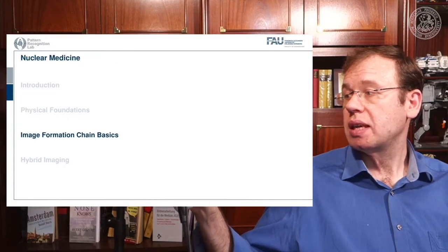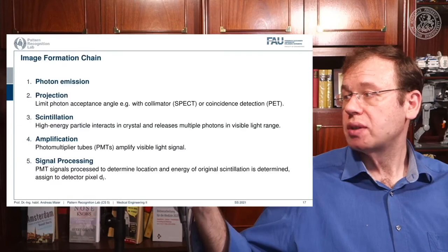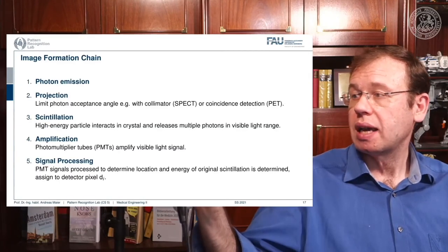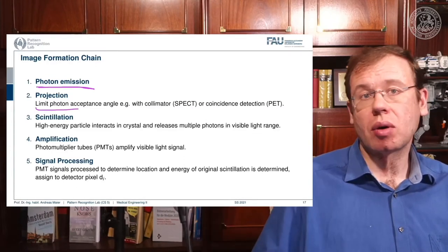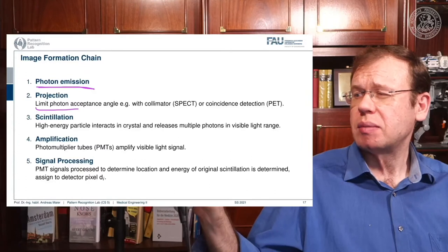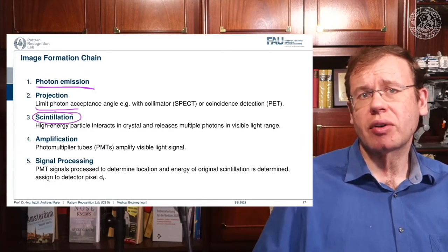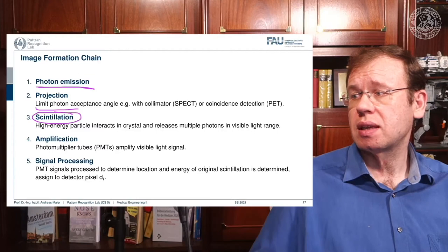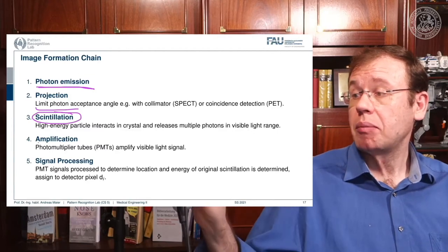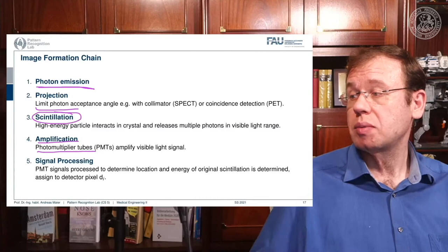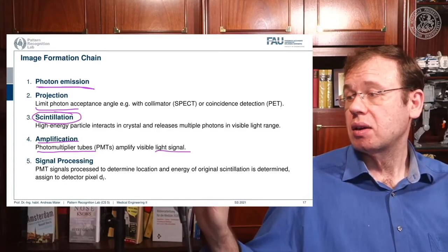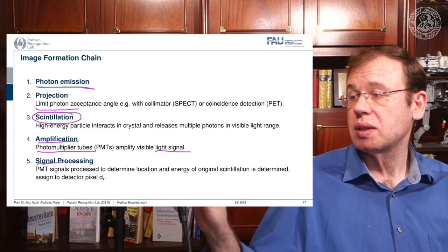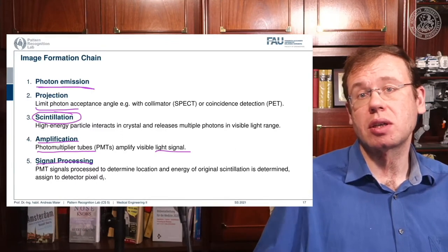Let's talk about image formation. First, we have to get photons to measure. The photons are projected onto a detector, then we use scintillation to figure out which photons are relevant. This is followed by amplification with photo multiplier tubes (PMTs), which gives us a light signal. Finally, signal processing yields the reconstructed image. This is the main outline of the image formation chain.